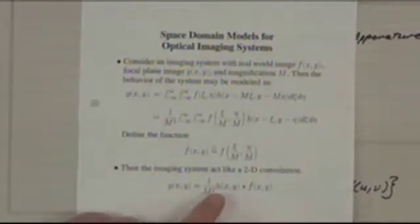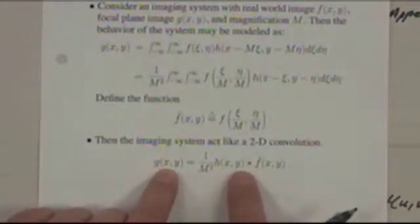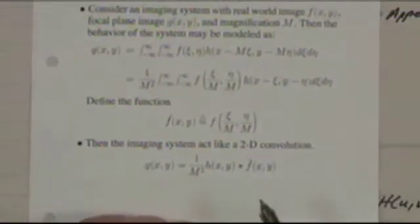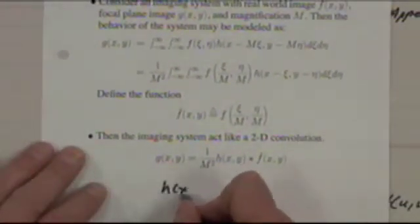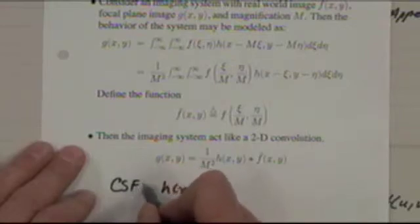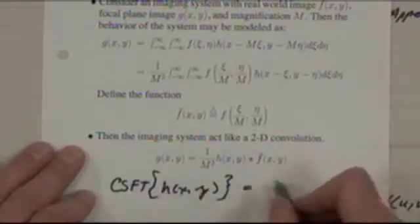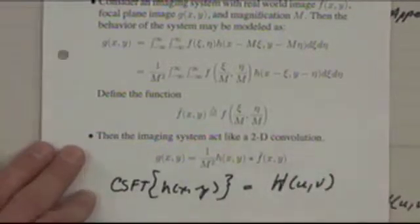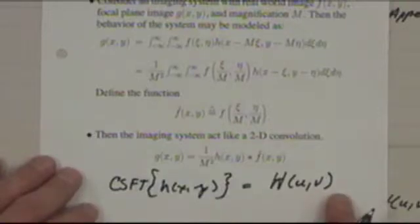And so basically, if you take away the magnification factor, the resulting image is like convolution of what the true image should have been with the point spread function of the imaging system. The point spread function is h of x, y, and its continuous space Fourier transform is going to be h of u, v. And h of u, v then characterizes the imaging system.